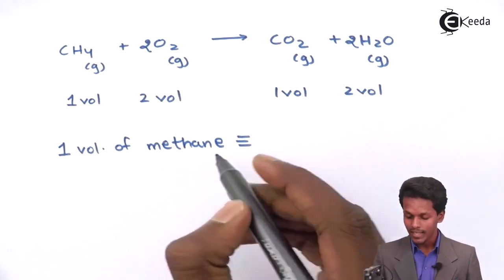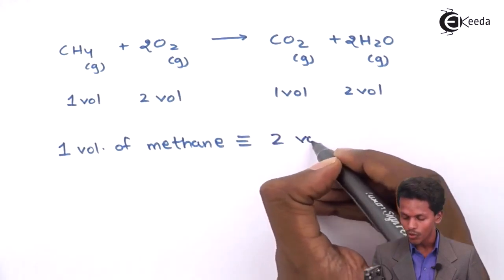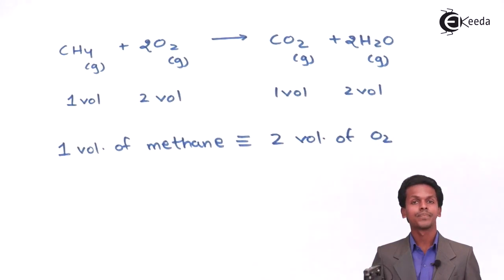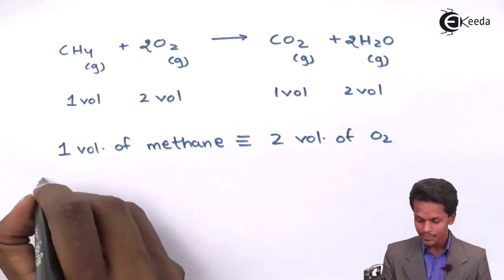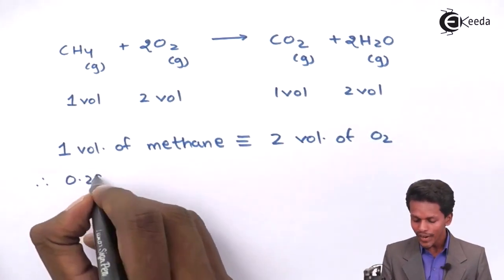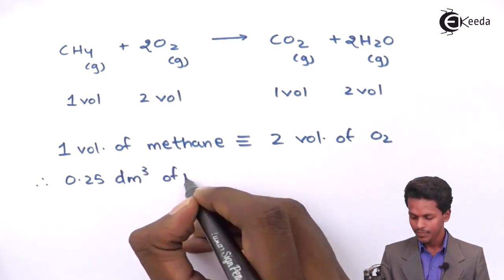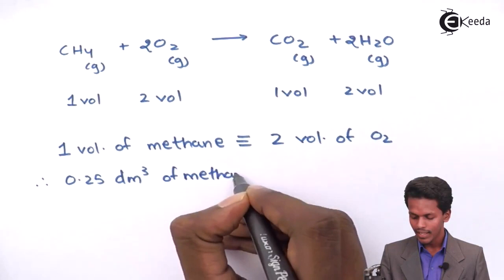So I could write it as, when one volume of methane will require two volumes of oxygen molecules. So that, the volume that they have been provided to us is 0.25 dm³ of methane. So I could write it as, 0.25 dm³ of methane will require, suppose, in this case, we don't know.